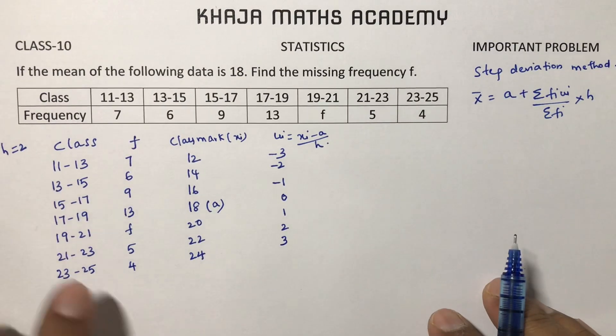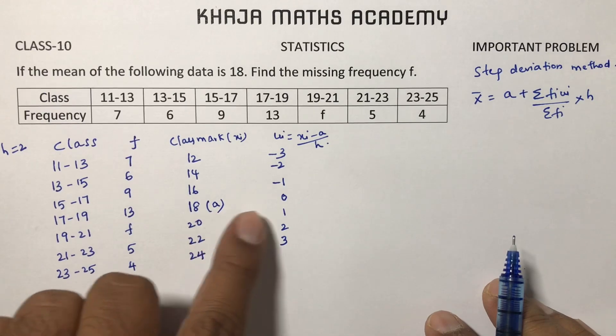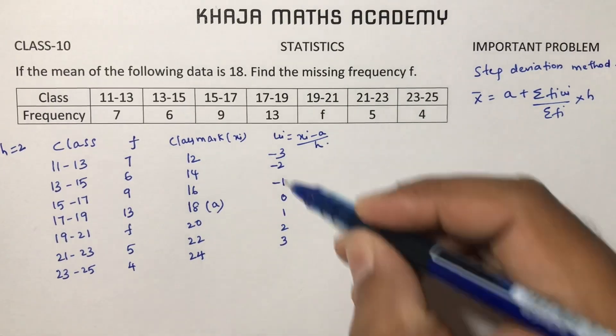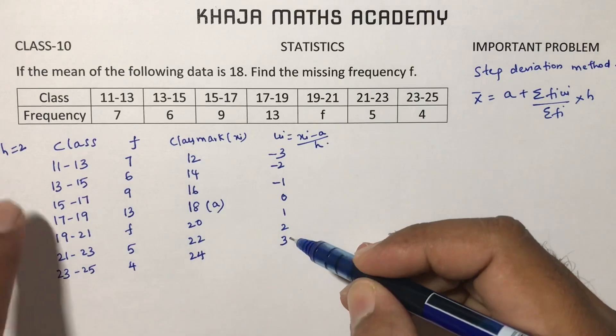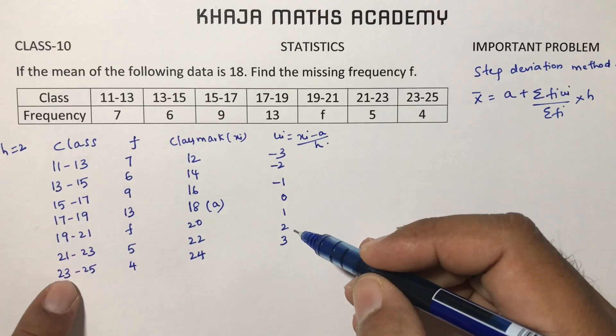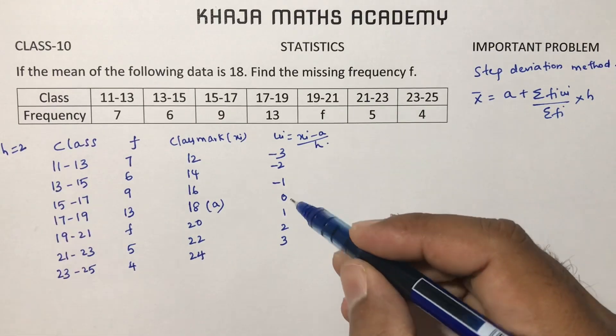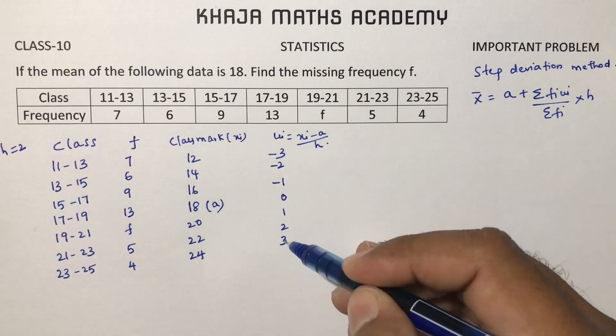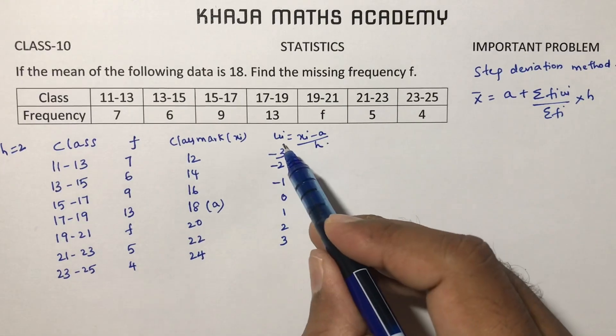If the classes are in ascending, beside assume value you can take 0. Then you can take minus 1, minus 2, minus 3 down, 1, 2, 3 up. If the classes are in descending, means this will come to the top and 11 to 13 down, then here 0, up positive, down negative. Or otherwise you can calculate. I will calculate here.